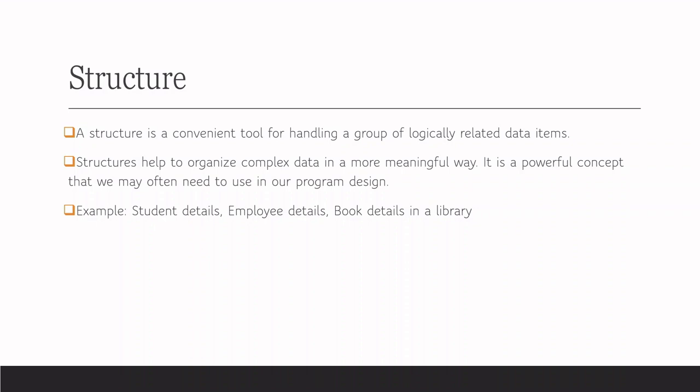A structure is a collection of logically related data and they can be of the same data type or different data types. In case of an array, if we need to save the marks of 30 students, we write array marks of 30 — that means same data type. For example, float marks[30] means all the marks are of float type. So only same data types can be combined in an array.